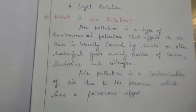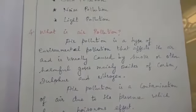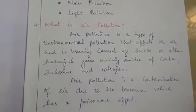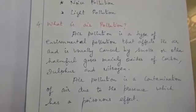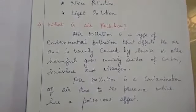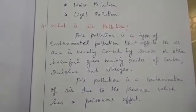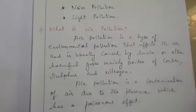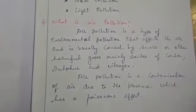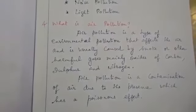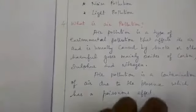What is air pollution? Air pollution is a type of environmental pollution that affects the air and is usually caused by smoke or other harmful gases, mainly oxides of carbon, sulfur and nitrogen. Air pollution is a contamination of air due to the presence of substances which have a poisonous effect.